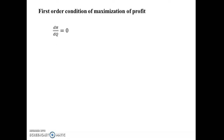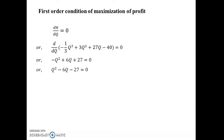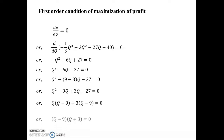Now let us apply the first order condition of profit maximization: dπ/dq = 0. Differentiating the profit function with respect to q we get −q² + 6q + 27 = 0. Multiplying both sides by −1 we get q² − 6q − 27 = 0. Applying the factorization method: q² − 9q + 3q − 27 = 0, and finally we get the value of q as 9 or −3.